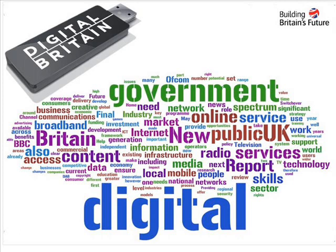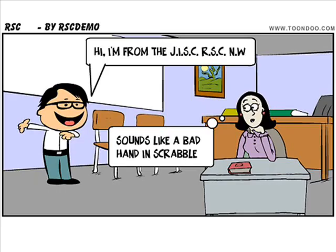One of the things we're going to look at now is word clouds. This is a way of taking a piece of text and creating a visual from it. The more times a word appears in a document, the bigger it appears in the word cloud. This is the Digital Britain report, and you can see the common words are 'government,' 'digital,' and to a lesser extent 'new' and 'public.'